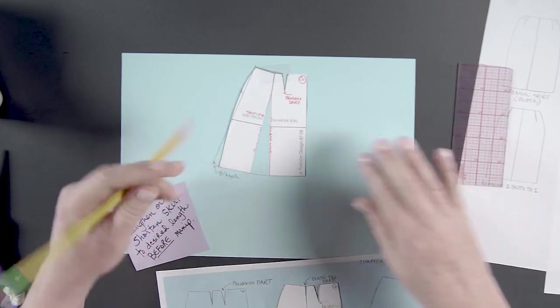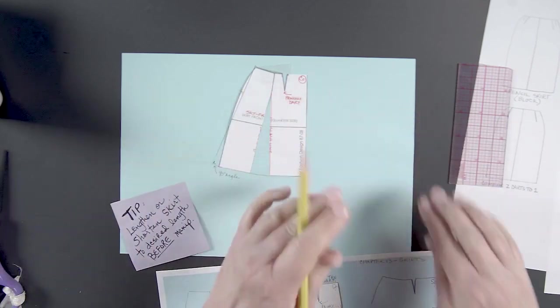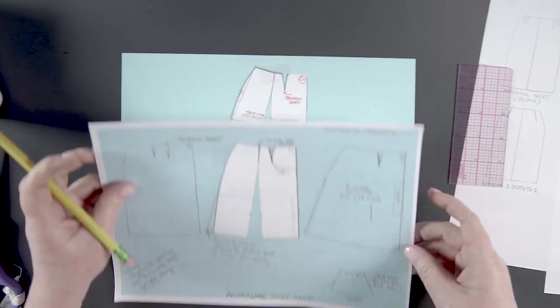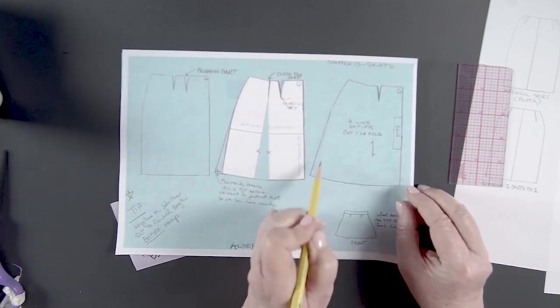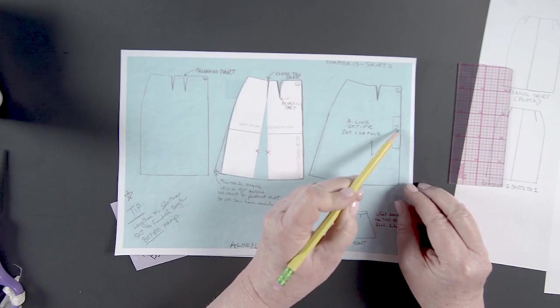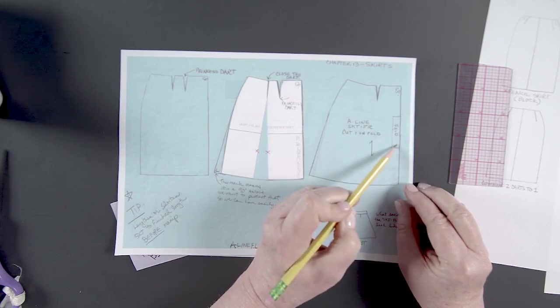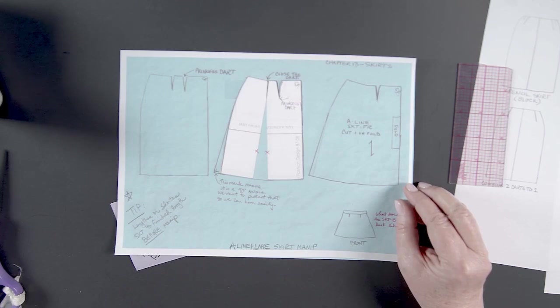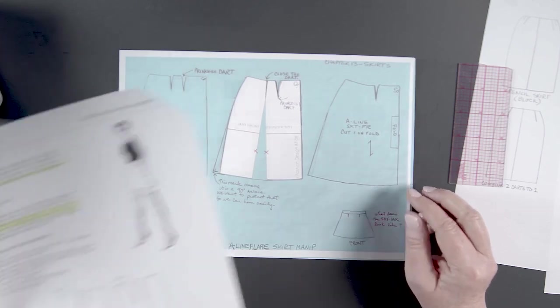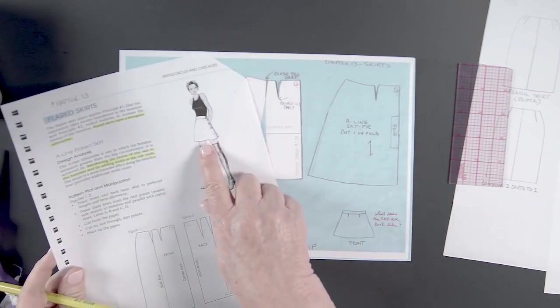So now you can pick this up, lay it over here, and redraw that to show that you understand what the finished perimeter looks like. We're going to put that on the fold because that's what our diagram is looking like.